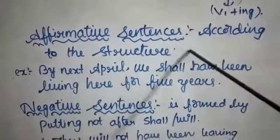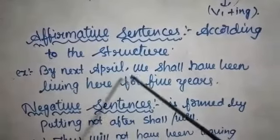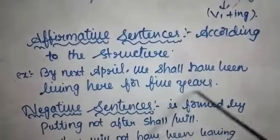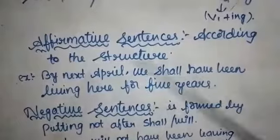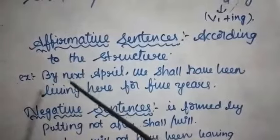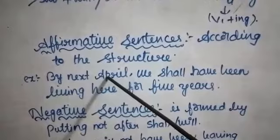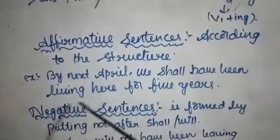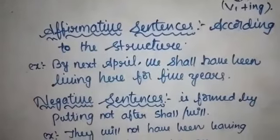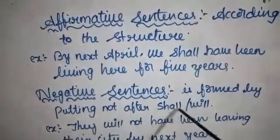We will see the affirmative sentences first according to the structure. See this example: 'By next April, we shall have been living here for five years.' Five years will be completed by next April, so that expression is in future perfect continuous tense. Now, negative sentences are formed by putting 'not' after shall or will.